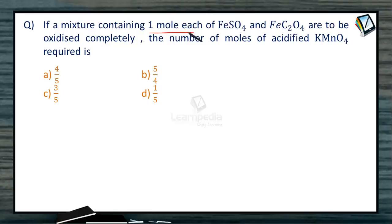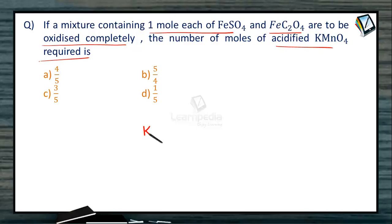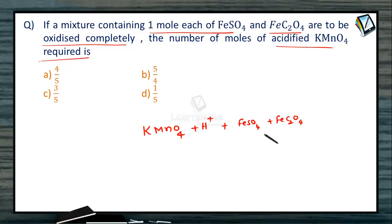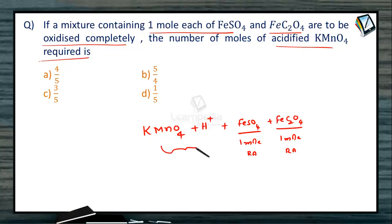If a mixture containing one mole each of ferrous sulfate and ferrous oxalate are to be oxidized completely, how many moles of acidified KMnO₄ is required? We are given an oxidizing agent as KMnO₄ in acidic medium to react with both ferrous sulfate and ferrous oxalate — one mole each, both acting as reducing agents. How many moles of this oxidizing agent is required for completely oxidizing the reducing agents is the question.